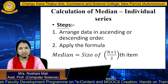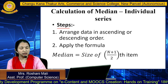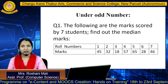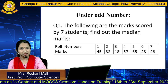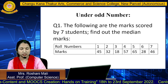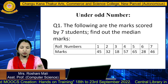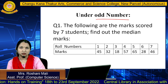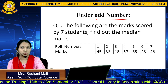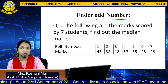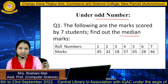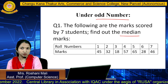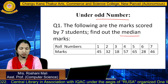This formula returns the position in your distribution. We have two cases: odd number of data and even number of data. For the odd number case, here is the question — we have marks scored by 7 students and we need to find the median. We have two columns: roll numbers and marks.